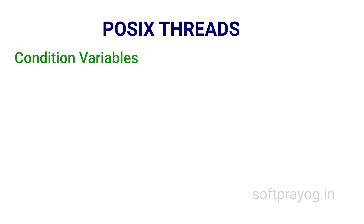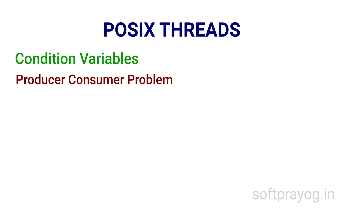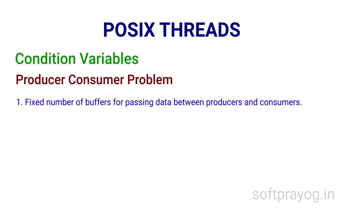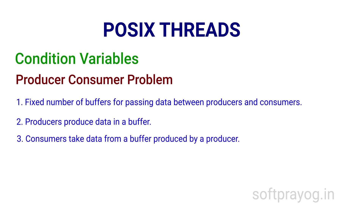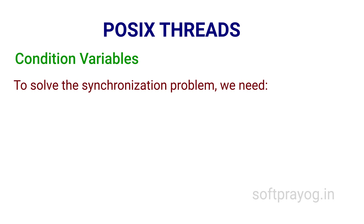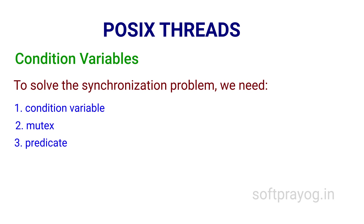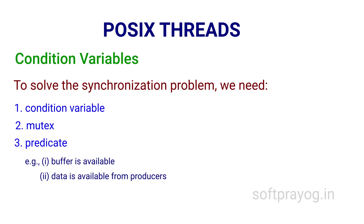There is a class of problems where threads share data and need to be signaled about changes in the state of data. For example, consider the producer-consumer problem. There are a fixed number of buffers for passing data between producers and consumers. Producers produce data in a buffer; consumers take data from a buffer produced by a producer. Producers need to know when an empty buffer is available; consumers need to know when a buffer filled with data becomes available. This problem can be solved using counting semaphores, but pthreads provides an alternate solution in the form of condition variables.